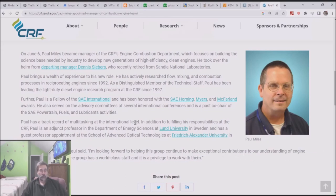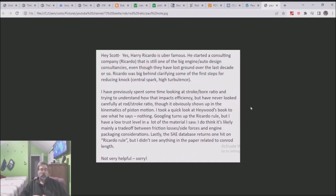Anyway, this is my cousin. I sent him an email. So this is what my cousin Paul said. Yeah, Harry Ricardo was uber famous. He started a consulting company over in Great Britain. He was big behind clarifying some of the first steps for reducing knock.